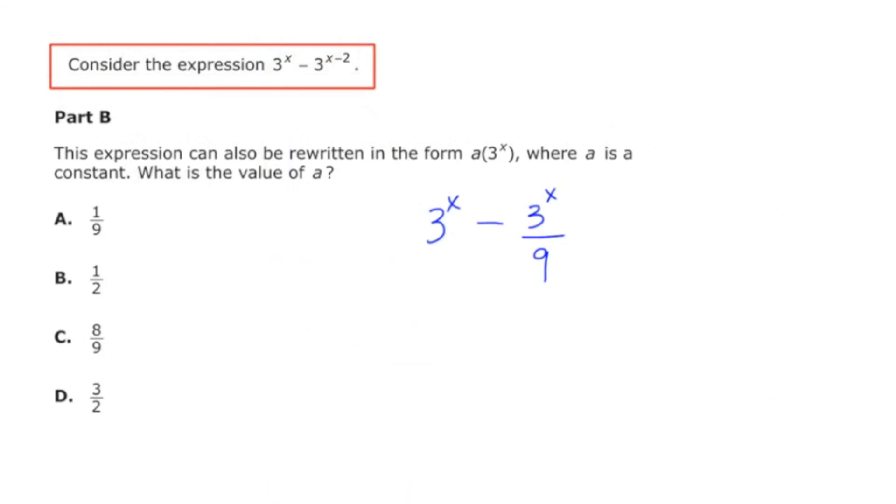So now we're on to part B, where we're still considering the same expression, but now they want us to simplify until we can get it into the form of a times 3 to the x, and then we have to figure out what this value of a is. So this is going to require a bit more manipulation.